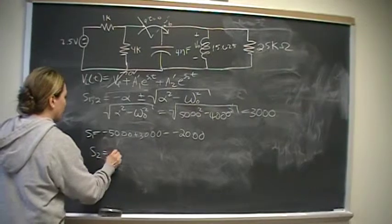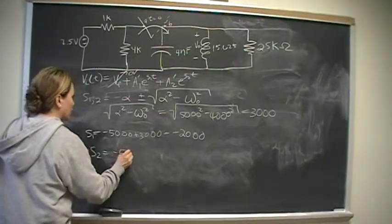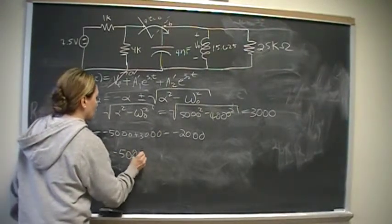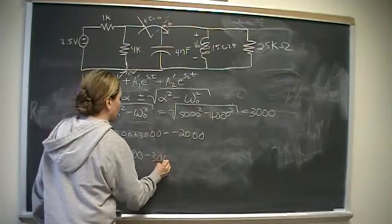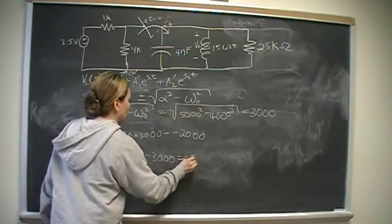S2 will be negative alpha, which is negative 5,000 minus 3,000, and that's going to be negative 8,000.